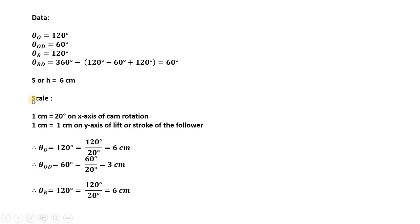The important part is to select the scale. The scale chosen is 1 cm equals 20 degrees on the x-axis of cam rotation, and 1 cm equals 1 cm on the y-axis of lift or stroke. So out stroke of 120 degrees divided by 20 gives 6 cm. Similarly, theta outward dwell of 60 degrees divided by 20 gives 3 cm. And return stroke of 120 degrees divided by 20 gives 6 cm. So on the displacement diagram these angles are represented as 6 cm, 3 cm, and 6 cm.